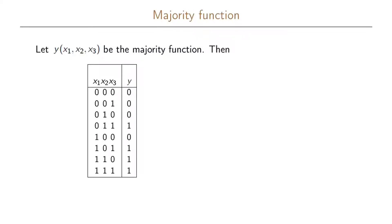To fully realize the majority function, we start by defining the truth table. For each possible input we write the corresponding output. For all zeros the output is zero. If there is only one 1 as input the output is also zero — this occurs in three places because zero is in majority. For the remaining cases where we have two or more ones, the output is one.